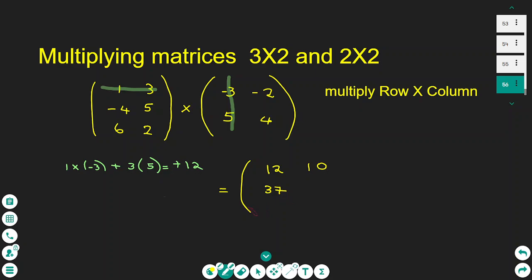And multiplying the second row by the second column, I have negative 4 times negative 2 plus 5 times 4, gives us 28. I write the 28 here.